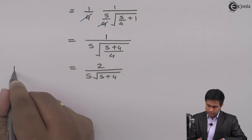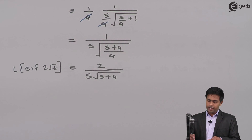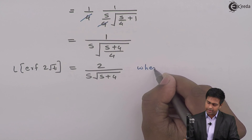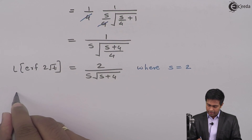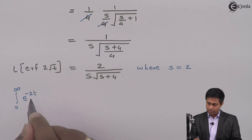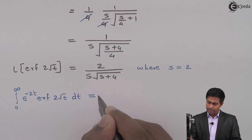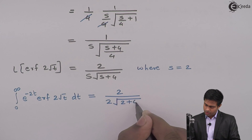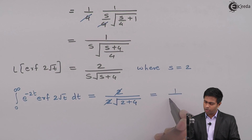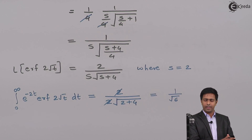So this is the value of Laplace transform of error function of 2 root t. Now to get the final value, we put s equal to 2. This gives integration 0 to infinity e raised to minus 2t error function of 2 root t dt equals 2 upon 2 root of 2 plus 4. The 2 and 2 cancel and we get 1 upon root of 6. So the value of integration from 0 to infinity e raised to minus 2t error function of 2 root t dt is 1 upon root 6.